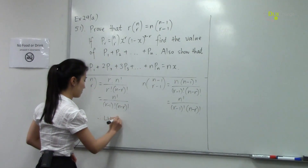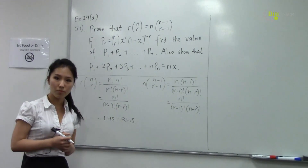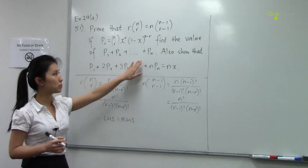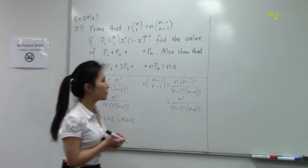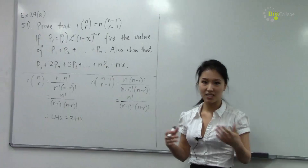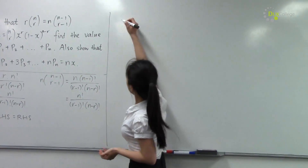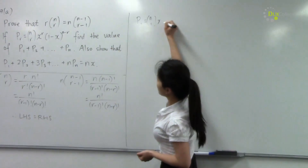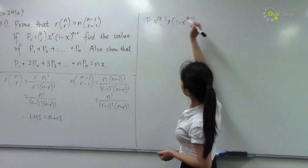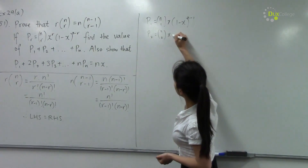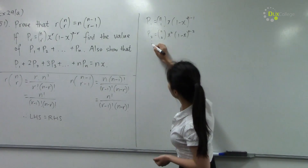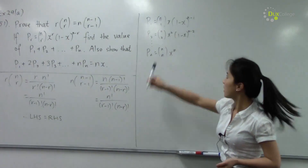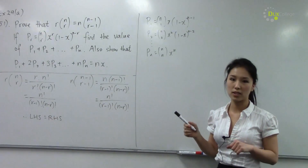For part two, we are given p(r) as an expression and need to show p1 + p2 + ... + pn equals a value. The easier approach is to write out p1, p2, and pn explicitly: p1 = C(n,1)·x·(1-x)^(n-1), p2 = C(n,2)·x²·(1-x)^(n-2), and pn = C(n,n)·x^n·(1-x)^0 = x^n.